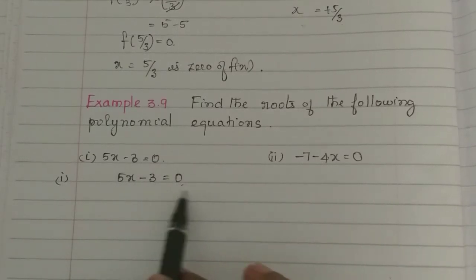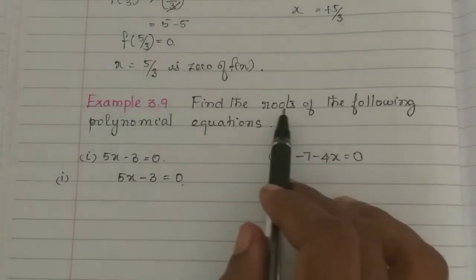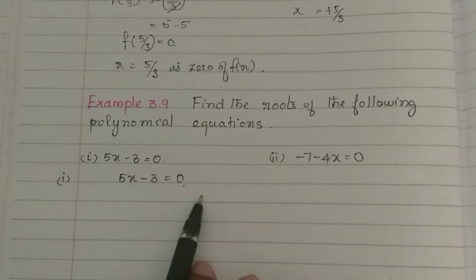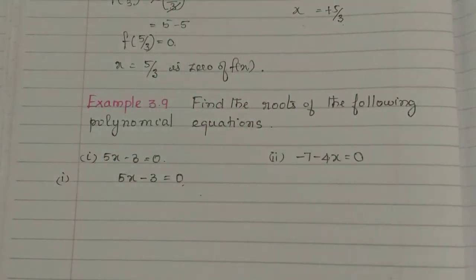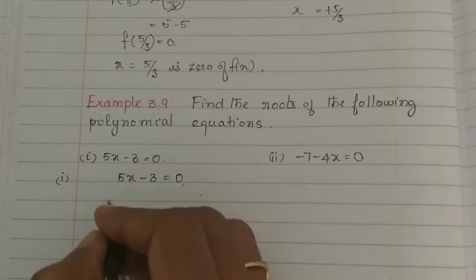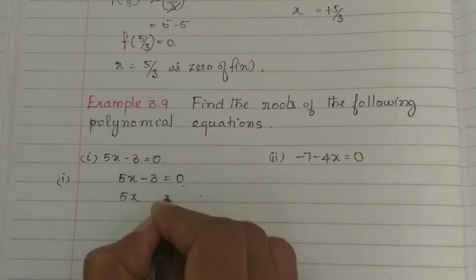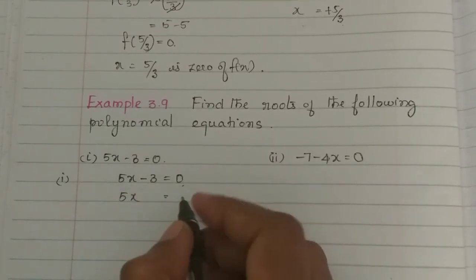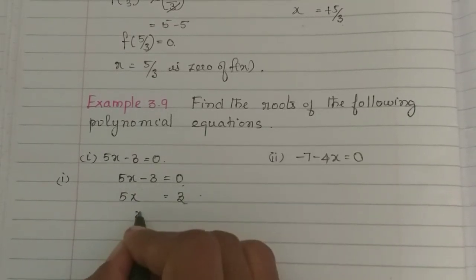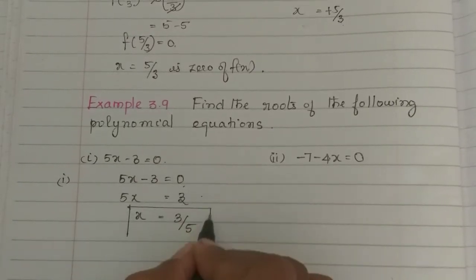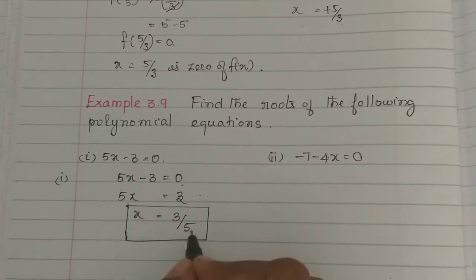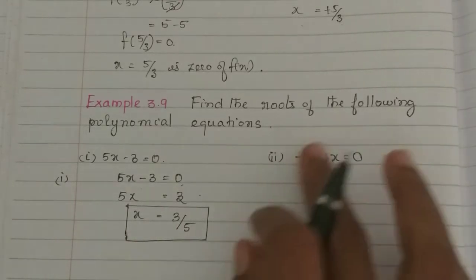We have 5x minus 3 equals 0. If you substitute it in the polynomial, it becomes 0. So now 5x equals minus 3 gives a problem — actually 5x equals 3, so x equals 3 by 5. This is the root.